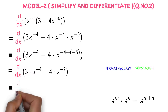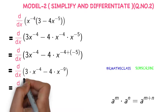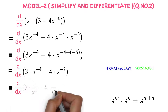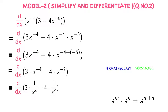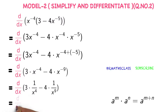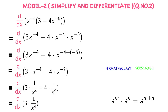Derivative of 3 into 1 divided by x power 4 minus 4 into 1 divided by x power 9. We differentiate each and every expression: derivative of 3 into 1 divided by x power 4 minus derivative of 4 into 1 divided by x power 9.